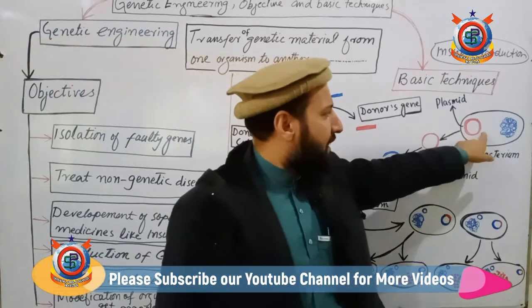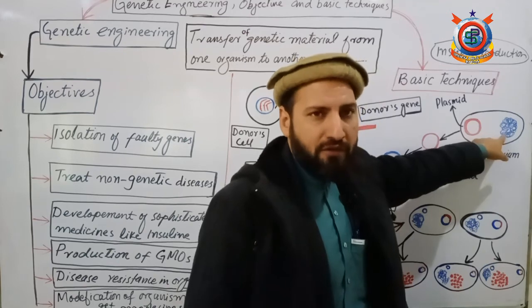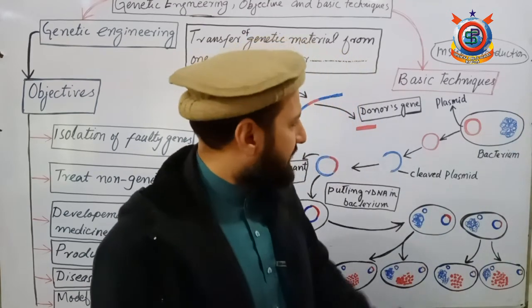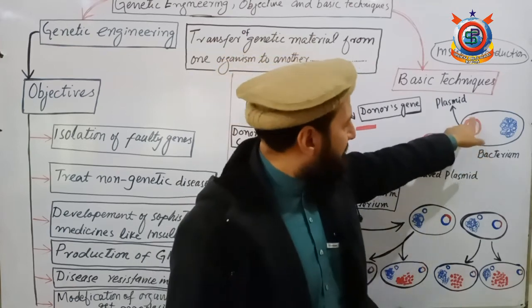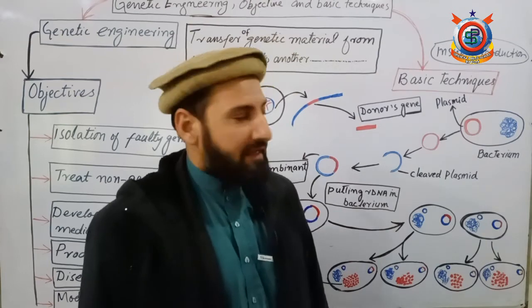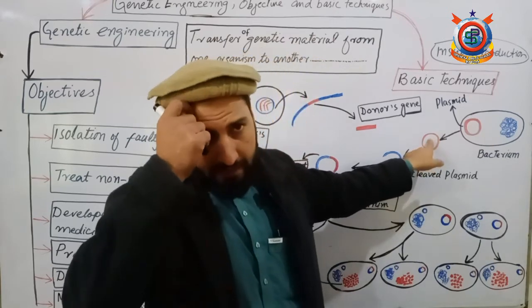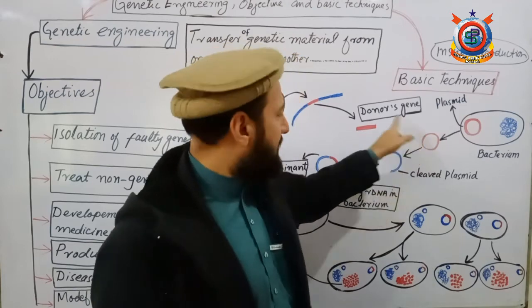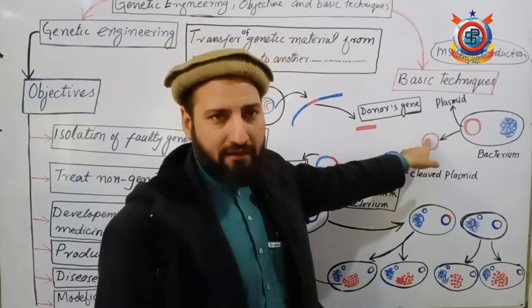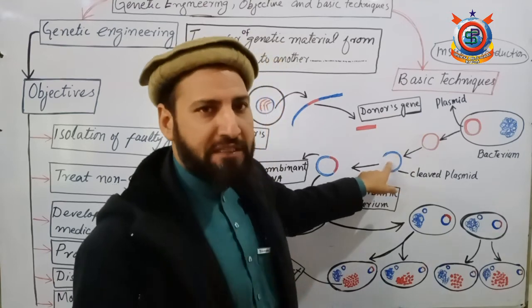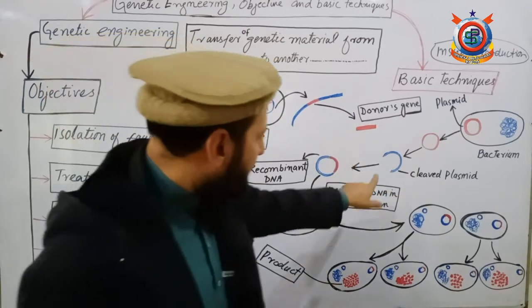In the second step, we take a bacterial cell. The bacterial cell has its own DNA molecule or chromosome. Inside the bacterium there is also an additional circular DNA molecule, shown here in red — this is called a plasmid. In this step, we remove the plasmid from the bacterial cell and cut it at a specific position using the same restriction endonuclease enzyme. The plasmid is thus cut at a specific position, as shown in blue color.